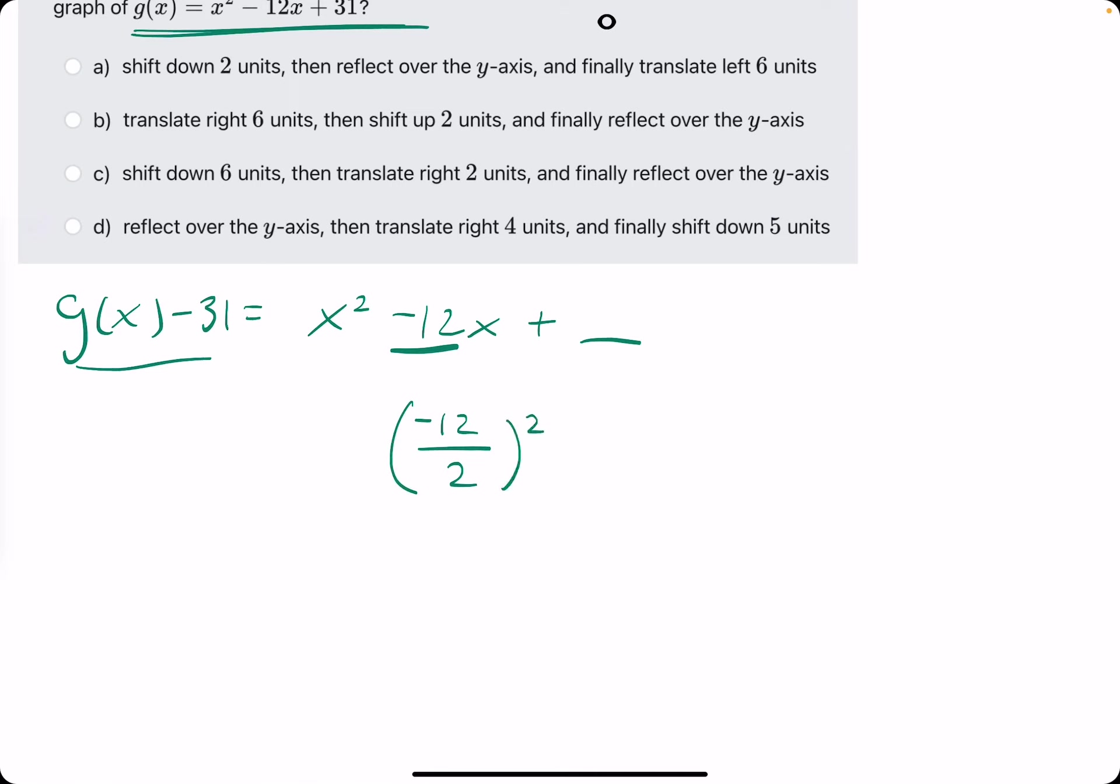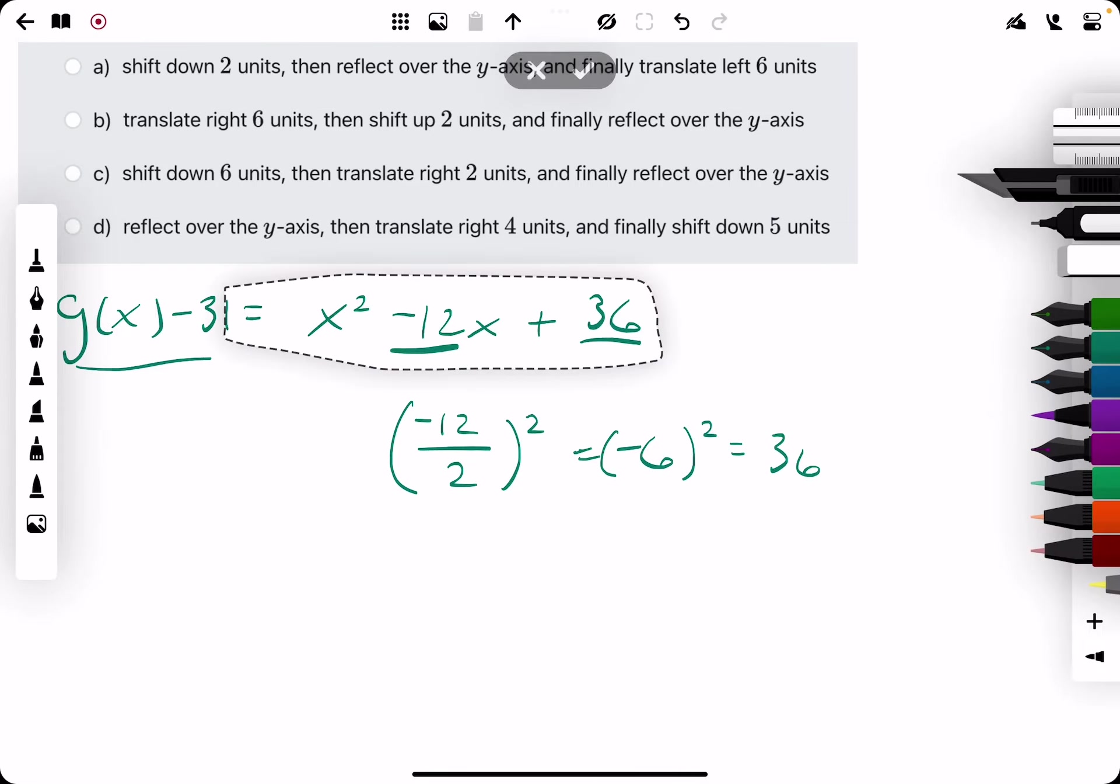So we take whatever number is next to the x value, usually known as our b, if we're thinking like a, b, and c, right? So we take our b, we cut it in half, we get negative 6, and then we square it to get 36. So that tells us we're adding 36 to the right side of the equation. If we add 36 to the right side of the equation, we also must add 36 to the left side of the equation.